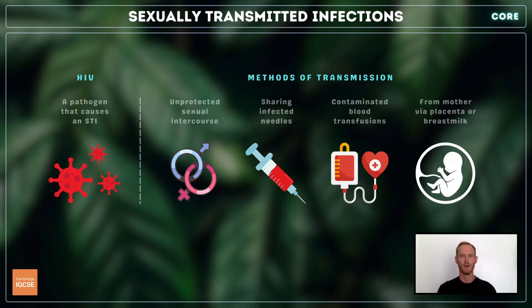The primary modes of HIV transmission include unprotected sexual intercourse with an infected partner, sharing contaminated needles or syringes during drug use, and receiving contaminated blood transfusions or organ transplants.